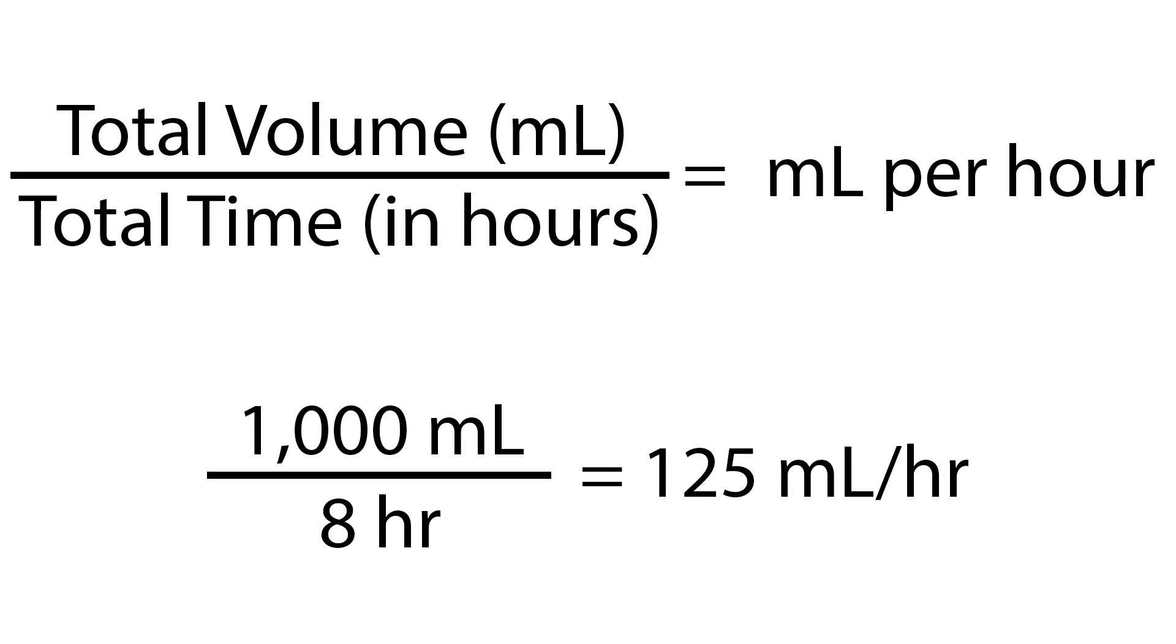If you simply need to figure out the milliliters per hour to infuse, take the total volume in milliliters divided by the total time in hours to equal the milliliters per hour. For example, if you have 1000 mL normal saline to infuse over 8 hours, take 1000 divided by 8 to equal 125 mL per hour.